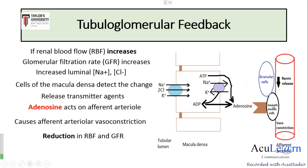Adenosine, by binding to its receptors, increases the calcium concentration in the smooth muscle cells and causes vasoconstriction of the afferent arteriole. The same adenosine also acts on the granular cells and inhibits renin release, resulting in decreased renin release. The afferent arteriolar vasoconstriction then reduces renal blood flow and the glomerular filtration rate.